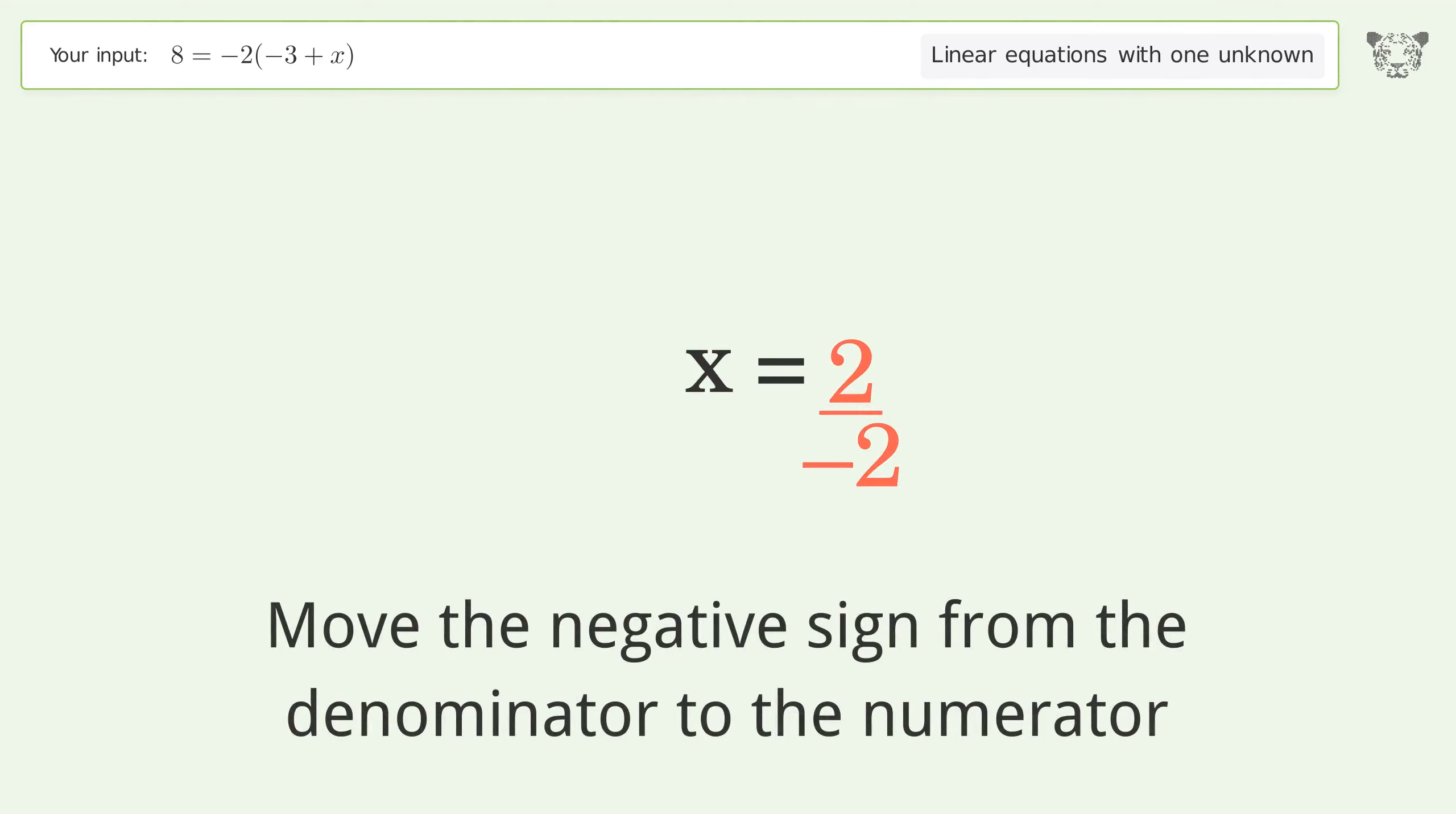Simplify the fraction. Move the negative sign from the denominator to the numerator. Simplify the fraction. And so the final result is x equals negative one.